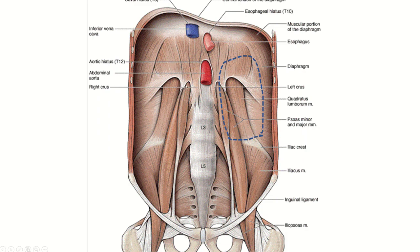This is the diaphragm, this is the medial arcuate ligament, lateral arcuate ligament, and this is the muscle of the posterior abdominal wall — psoas major, psoas minor and quadratus lumborum — and this is the muscle of the anterior abdominal wall, transversus abdominis. So here is the posterior surface of the kidney, related to all these muscles. This is all about the relations of the kidneys.